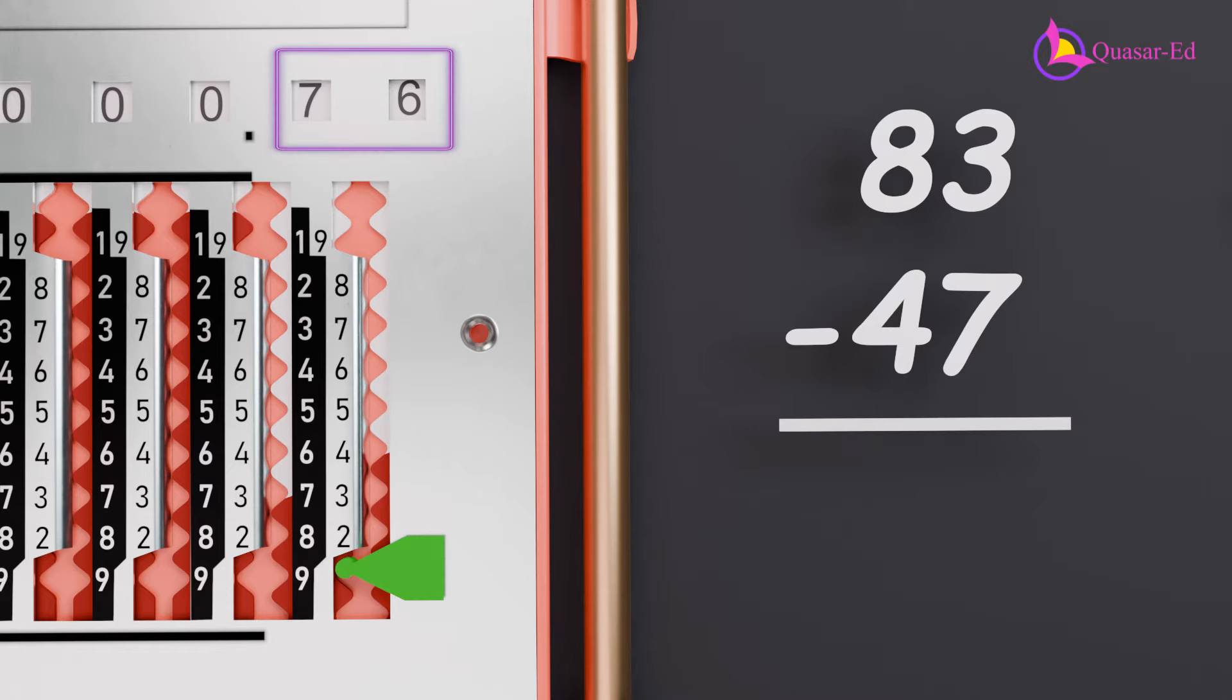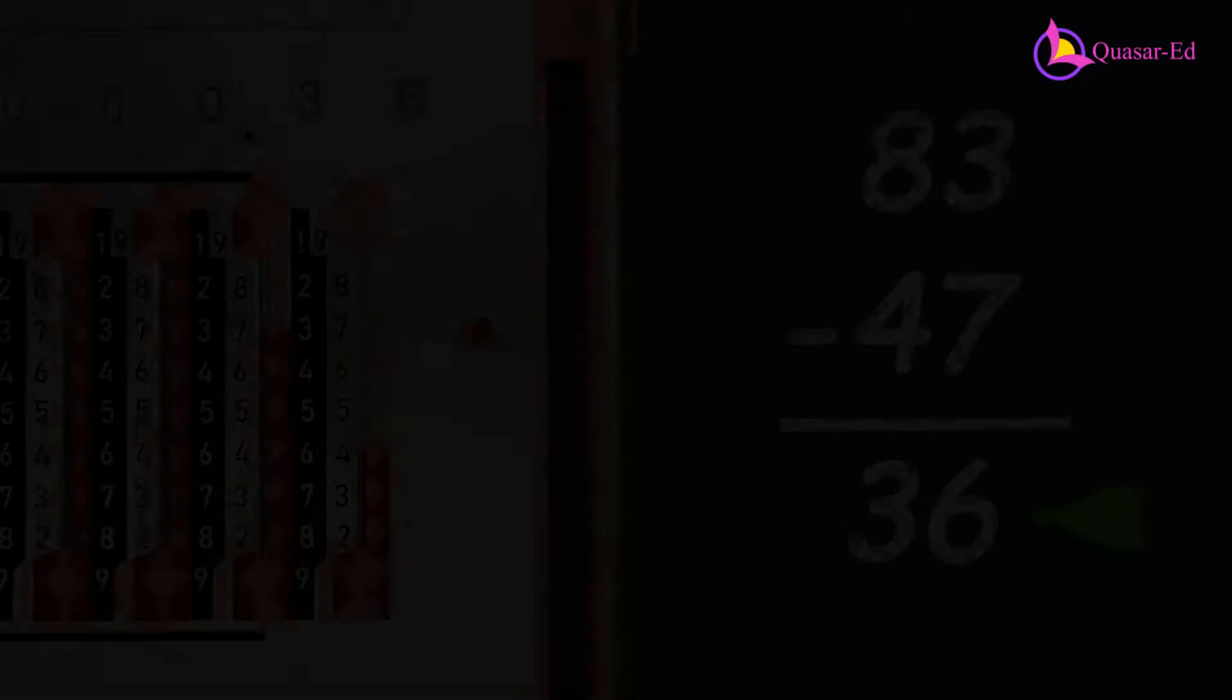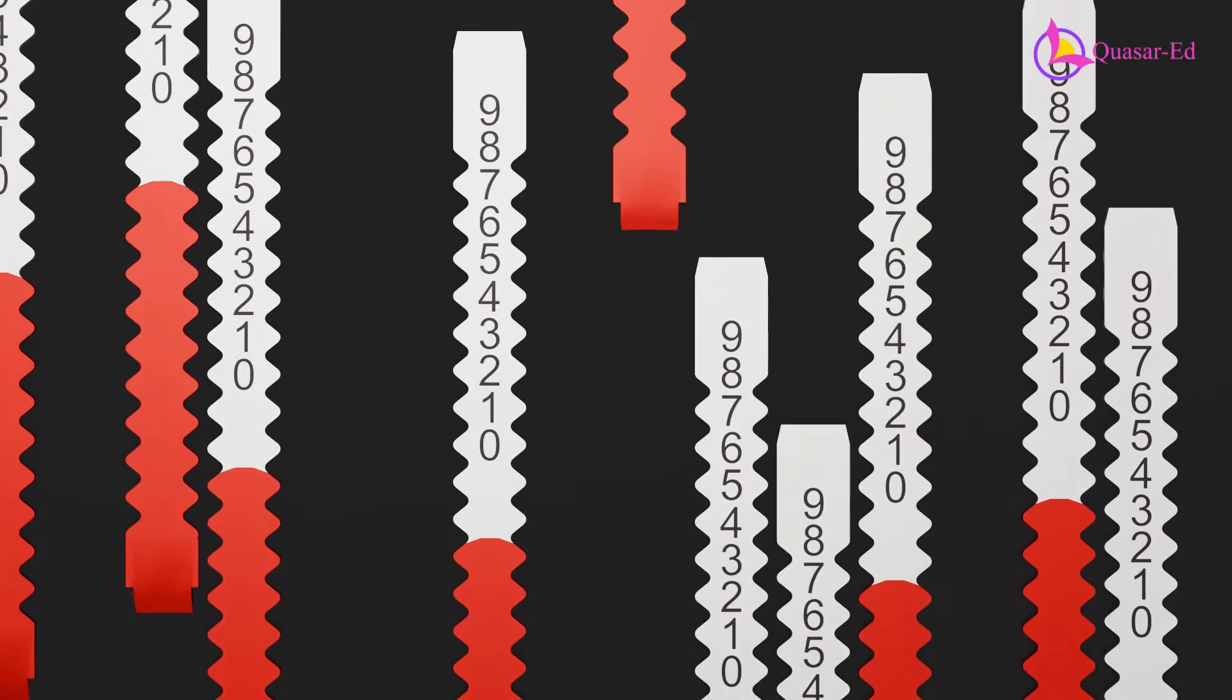Now move to the left column, 7. We need to subtract 4 from 7. Since it is in the white section, pull up 4 on the slider, resulting in 3. Thus, 83 minus 47 gives us 36. That's pretty cool, but why does it work?